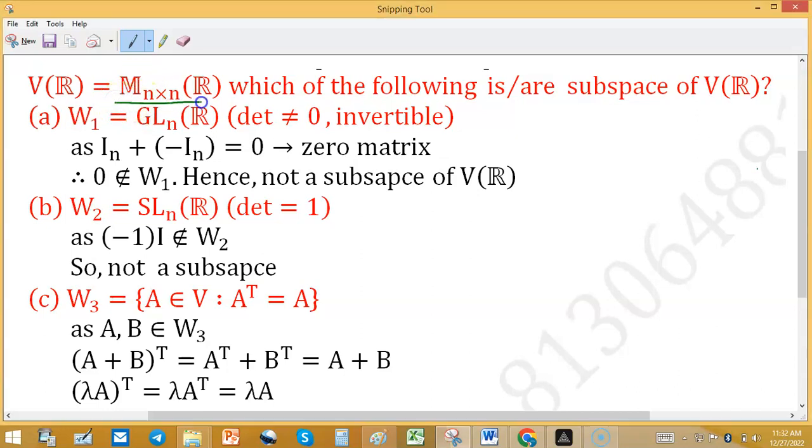The square matrices over R form a vector space, and we define a few subsets. First one, W1.